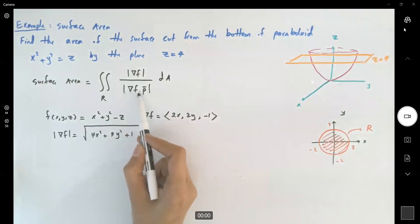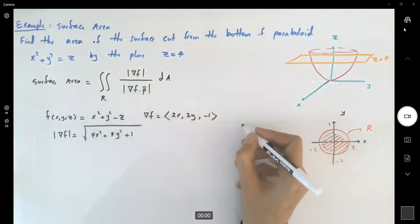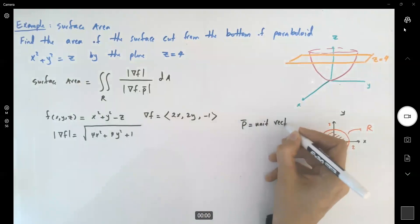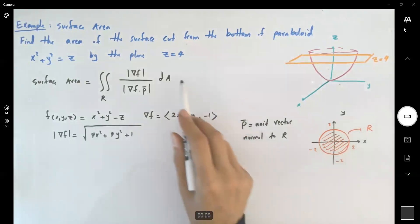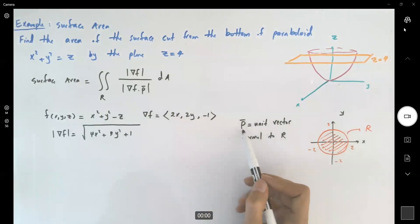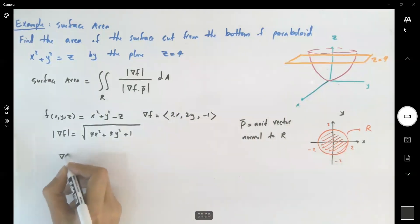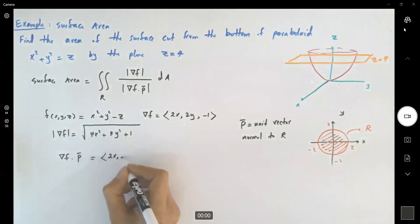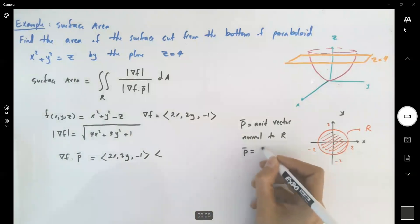What about gradient of f dot unit vector p? p is the unit vector normal to r by definition. When we talked about the formula in previous video, we represent p as the unit vector normal to r. So the gradient of f dot p, this guy is going to be 2x, 2y, and negative 1, and p as the unit vector. This unit vector is going to be 0, 0, and 1. Why is that?